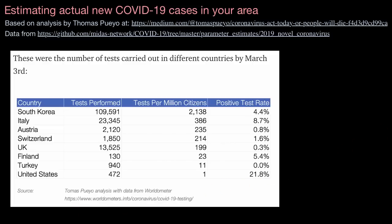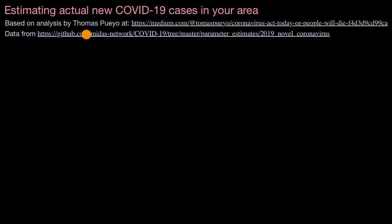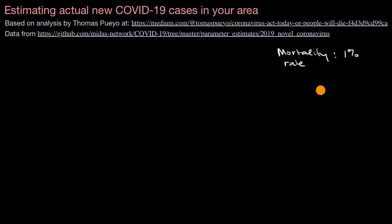So how do we estimate the actual number of cases in our area? We're going to look at the number of deaths and estimations of mortality rate, time from infection to death, and how fast the virus spreads. For mortality rate, we can assume 1% — reports are as low as 0.6% in South Korea and as high as roughly 5% in places like Iran. The higher numbers appear where the hospital system is being overwhelmed, and the lower numbers may not be fully accounting for all mortality from actual cases. So we'll assume a mortality rate of 1%.